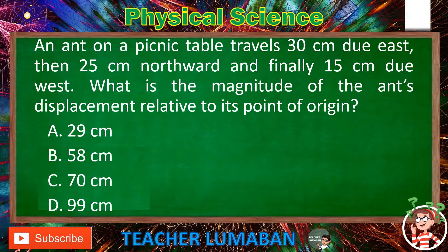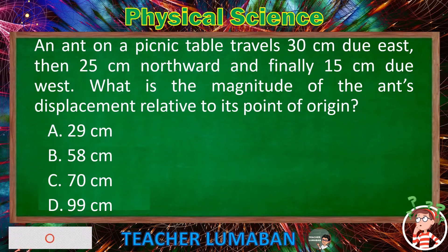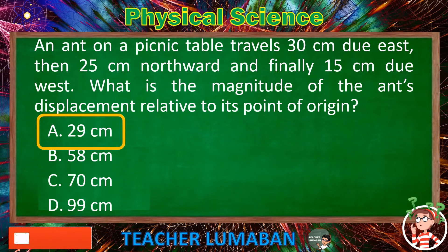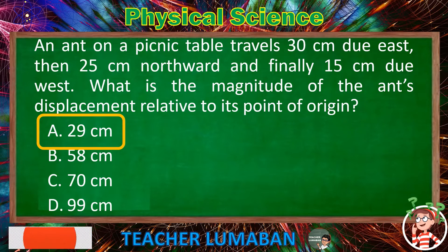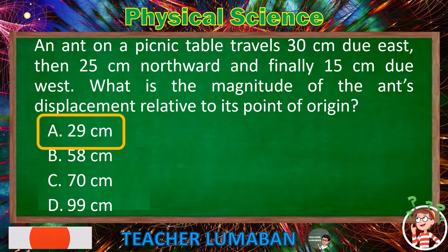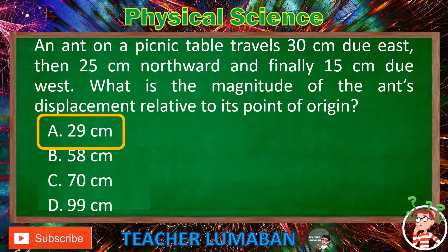The correct answer is letter A — 29 cm. An ant on a picnic table travels 30 cm due east, then 25 cm northward, and finally 15 cm due west. The magnitude of the ant's displacement relative to its point of origin is 29 cm.